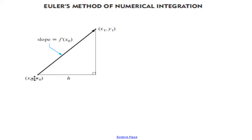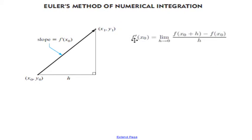So we have a beginning point, a starting point: x0, y0. We know the differential equation, which is the slope function. We want to guess what the y coordinate is for the next point. We have a gap between consecutive x values of h. And we know if we work out the slope using first principles, we end up with the following equation. So the slope function f'(x0) is the limit as h approaches 0 of f(x + h) minus f(x) on h, and in this case our x value is x0.